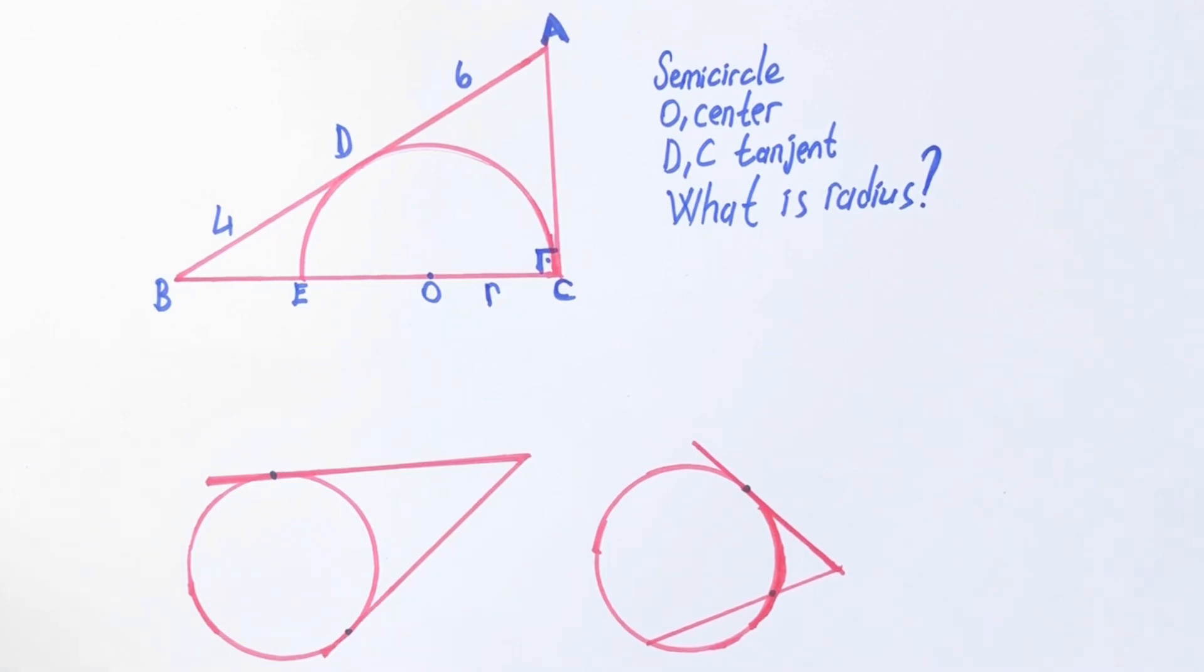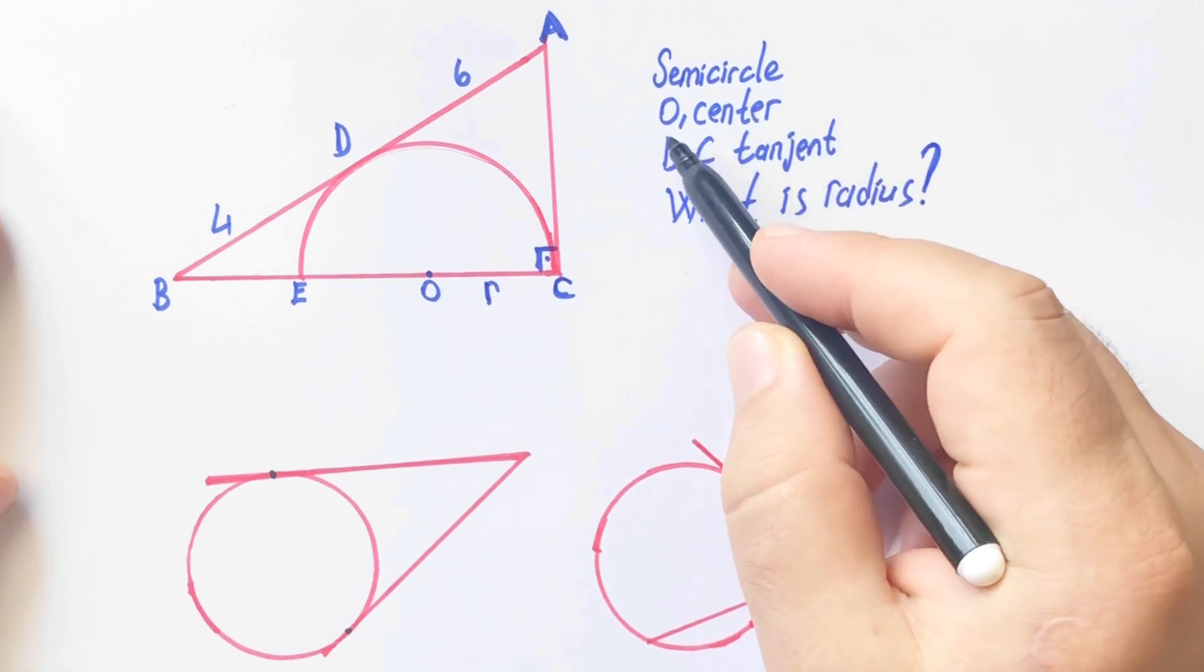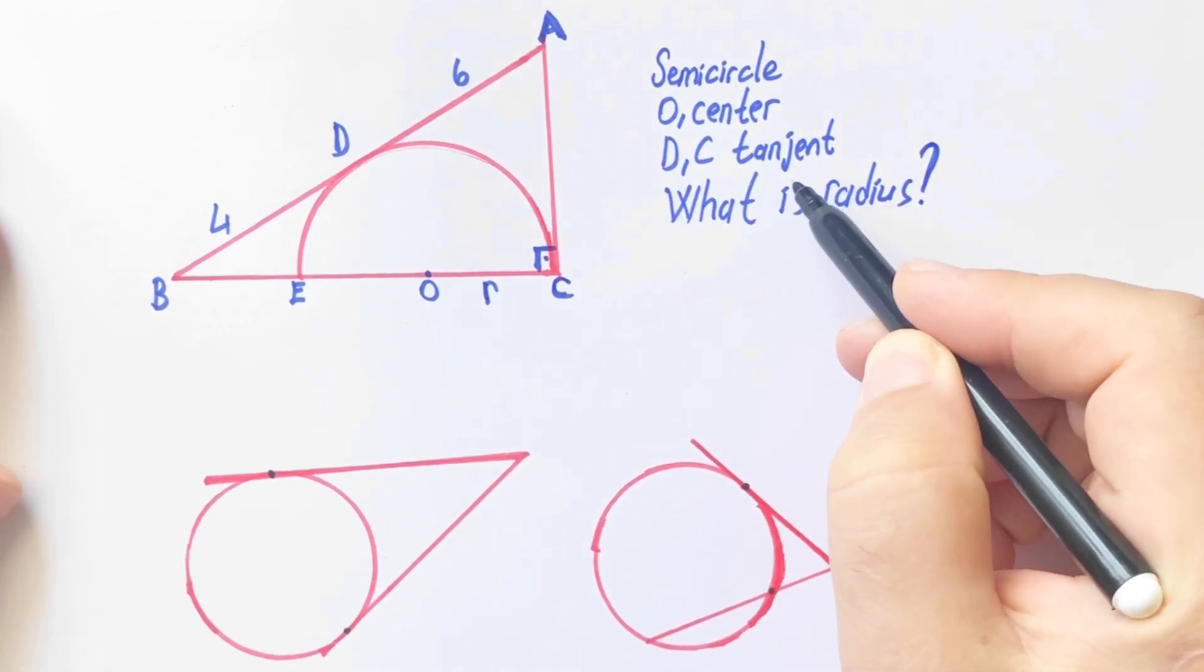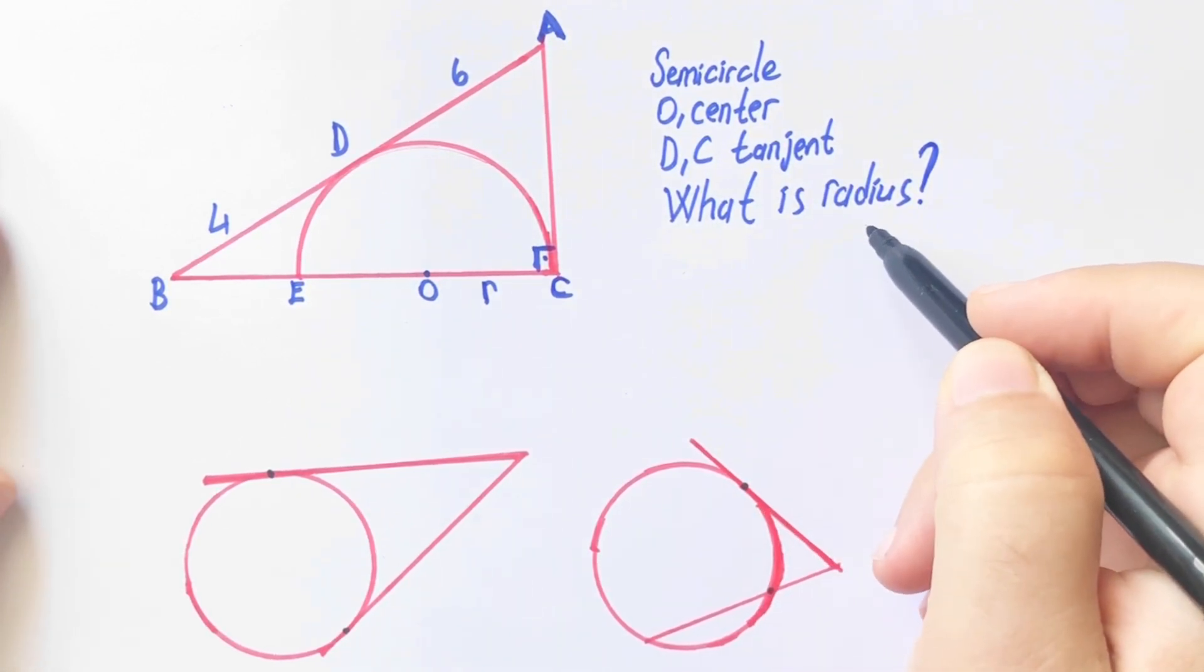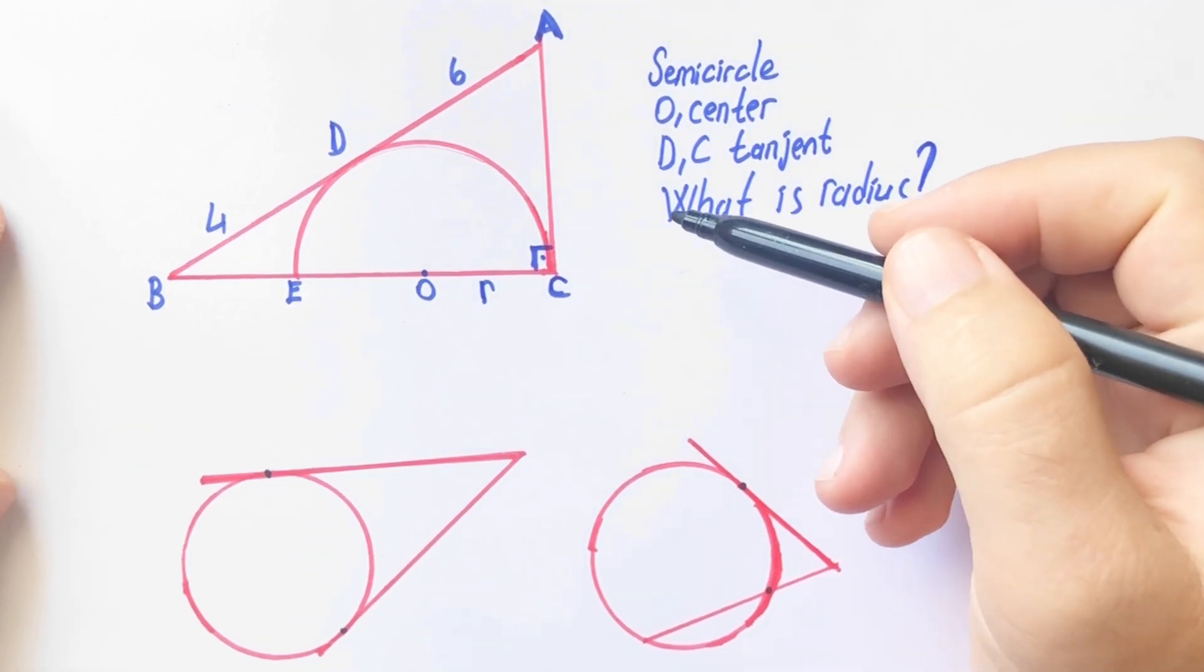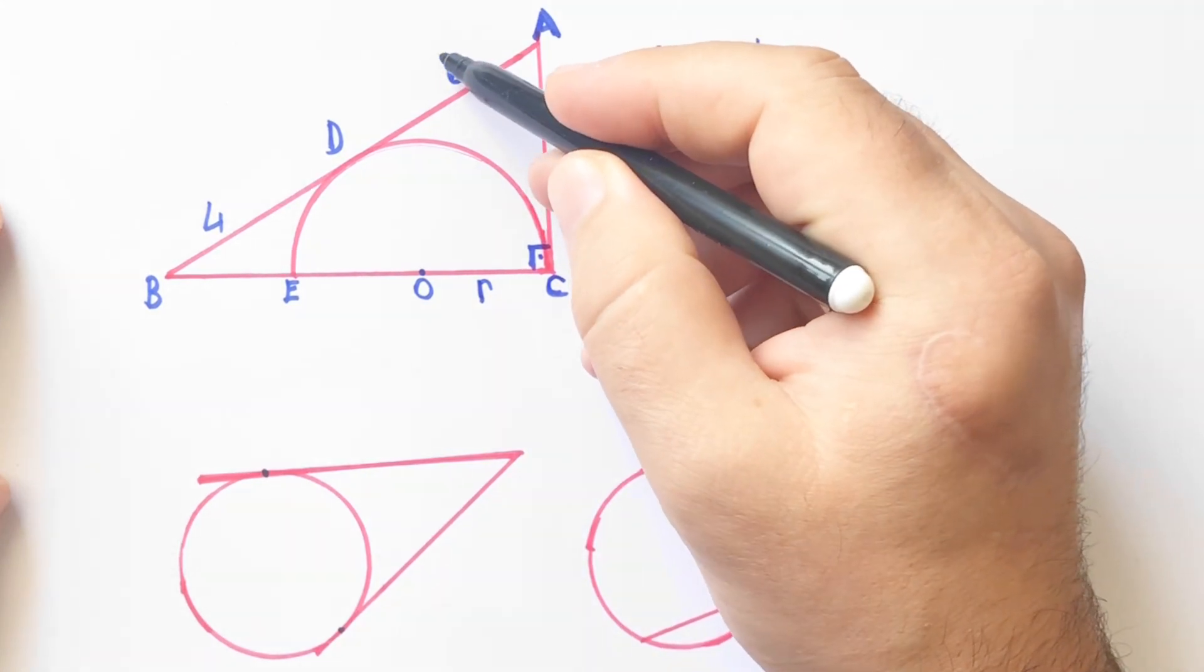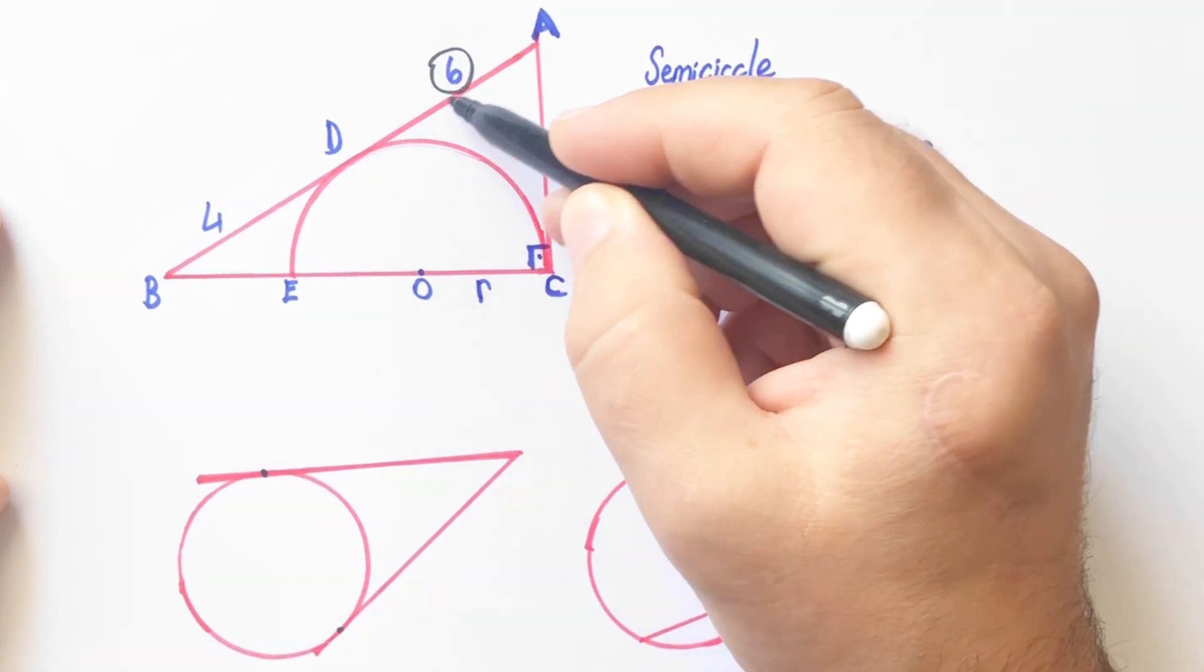Hello everyone, in this video we will calculate the radius of a circle. We have semicircle O as center, D and C are tangent points. So what is the radius of the circle? We know that DA is 6 units.